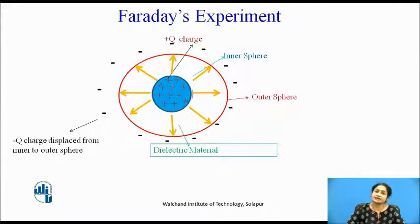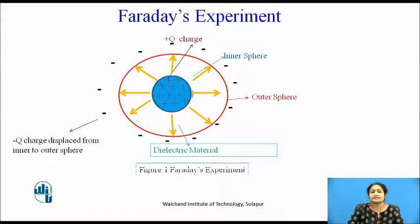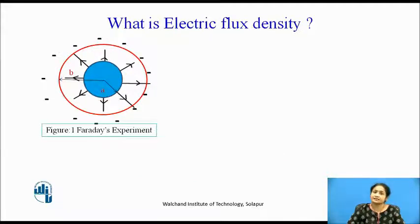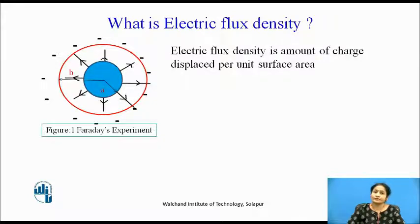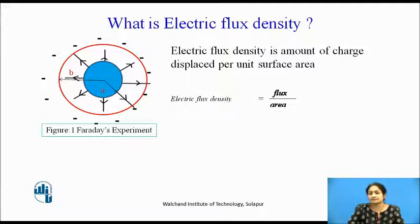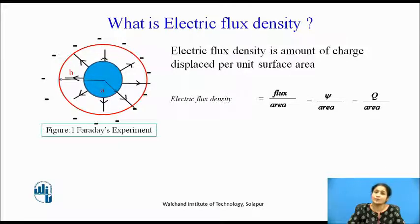These charges are called displaced charges, from the inner surface to the outer surface. From this experiment, Faraday defined the term electric flux density as the amount of charge displaced per unit surface area. Mathematically, electric flux density equals flux divided by area. For the electric field, flux ψ is replaced by charge Q, so D = Q/A.